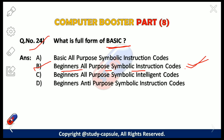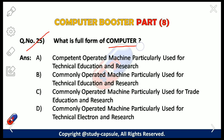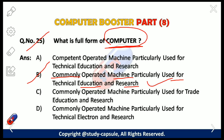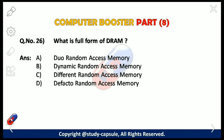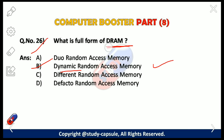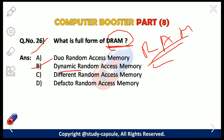Our next question: what is the full form of COMPUTER? The answer is B — Commonly Operated Machine Particularly Used for Technical Education and Research. Our next question: what is the full form of DRAM? The answer is B — Dynamic Random Access Memory. Dynamic Random Access Memory is a type of random access memory that stores each bit of data in a separate capacitor within an integrated circuit.